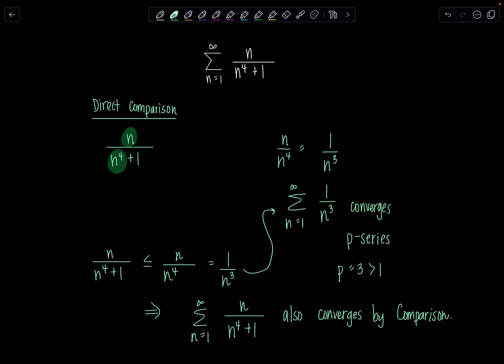Here's the thing: when you do the direct comparison test, you already have to have a feeling as to whether or not your series is going to converge or diverge, because you need to know — am I trying to show that this is smaller or larger than something? So you already have to know or suspect how things are going to turn out. I think this is the most direct test we could use.